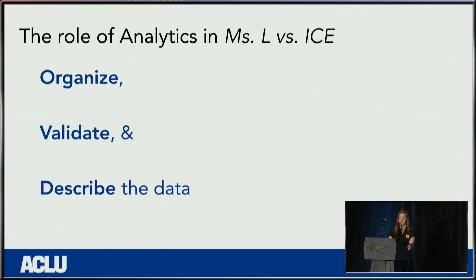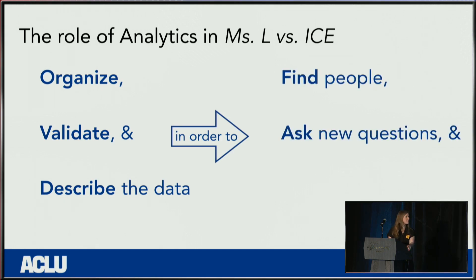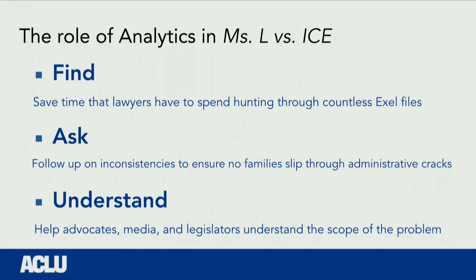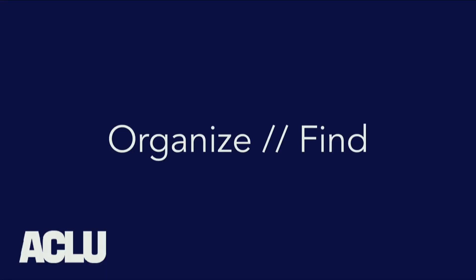My role was to support the team in what they needed: to find out what data was wrong, what was missing, and what families might be falling through the cracks. That boiled down to three main actions: organizing, validating, and describing the data so that we could find people, ask new questions, and understand what was going on. Basically, that means rectangulating hundreds of Excel spreadsheets, finding errors and inconsistencies in those, and then calculating descriptive statistics so that we could identify individual cases and make sure that advocates, media, and legislators knew what was going on.